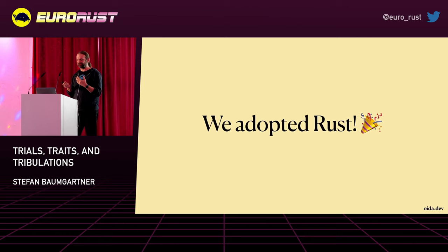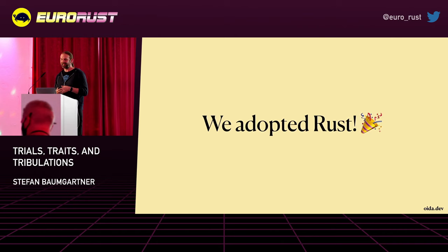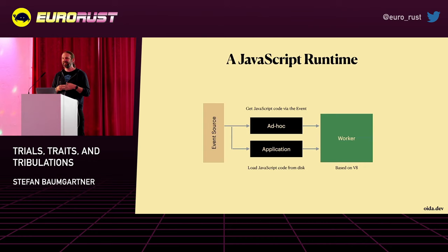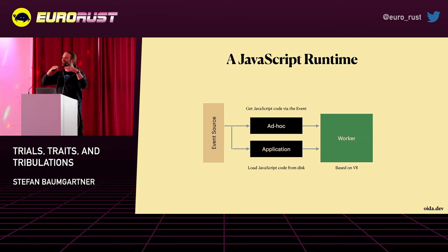Rust enables us to do things that we didn't think we were able to do before. This is actually the project we are working on — we are developing our own JavaScript runtime. It's very interesting because it covers a couple of use cases we couldn't do otherwise. We get events from some event source, either an HTTP event like a request, or maybe on AWS Lambda, or somewhere in some process. And we need to be able to execute arbitrary JavaScript code on those places.